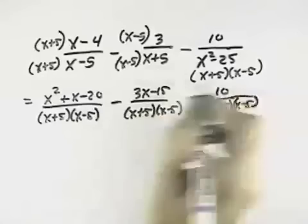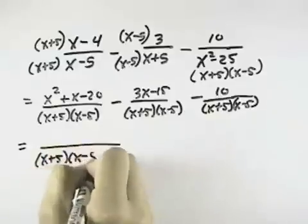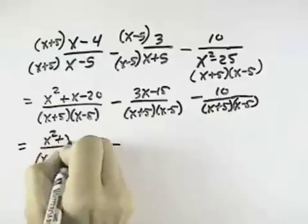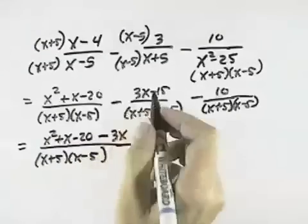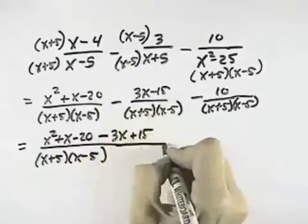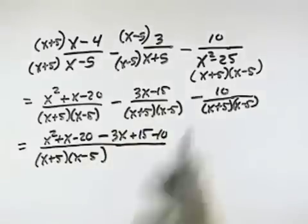So we want to put that all together over the common denominator. We have x squared plus x minus 20, then minus 3x, but remember minus and negative becomes plus 15, and then minus 10 for our third fraction. We put them all over the common denominator.